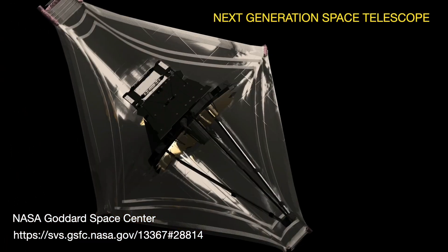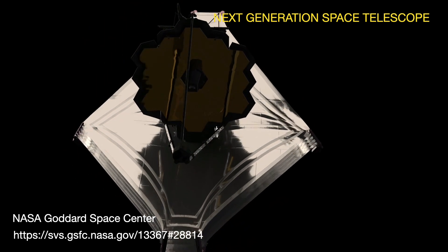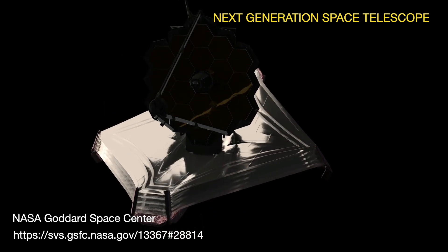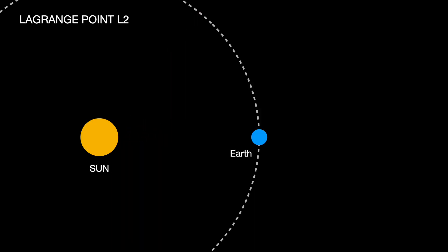This is the next-generation space telescope. It is going to be put in a place in space that stays in the same position relative to the Earth. We call this the L2 Lagrange point. But what does that even mean?